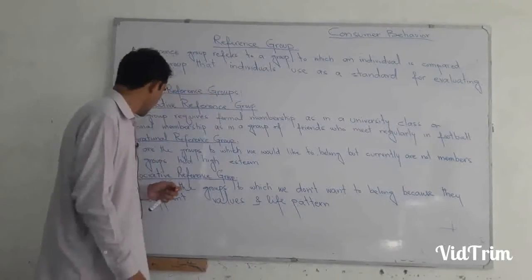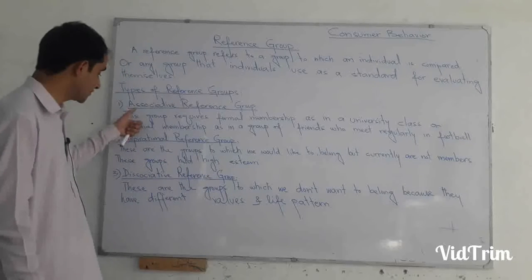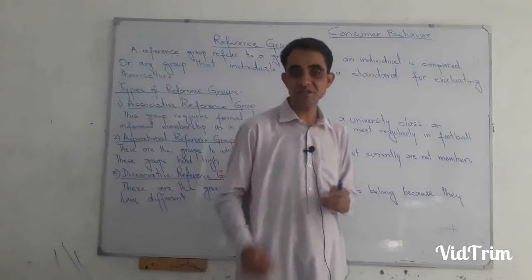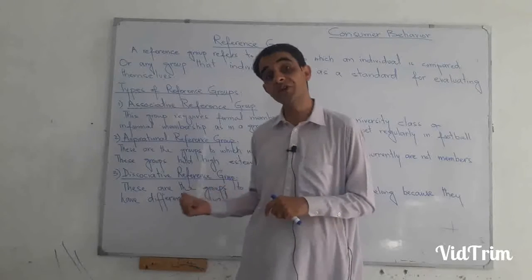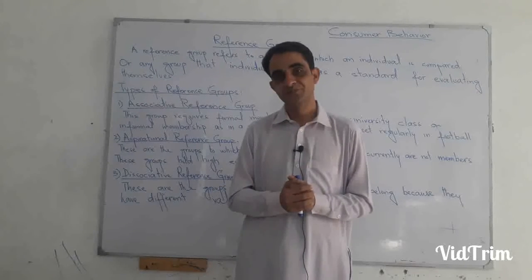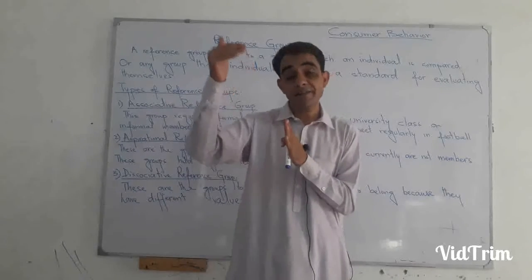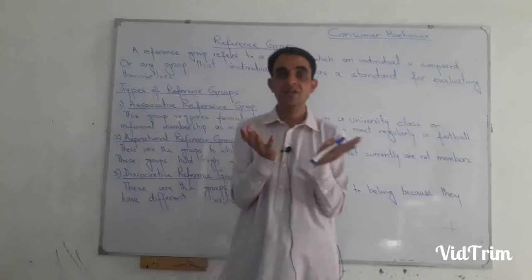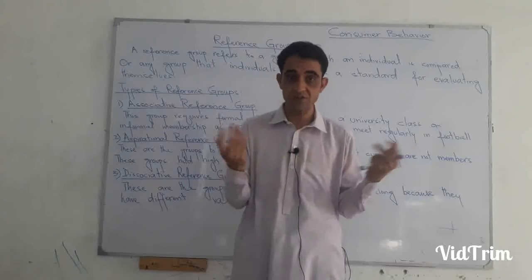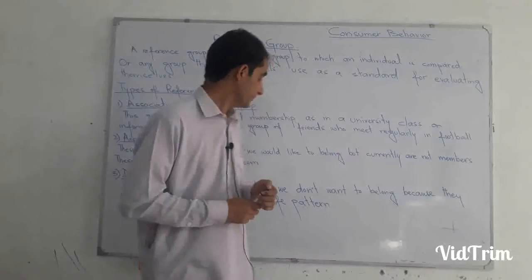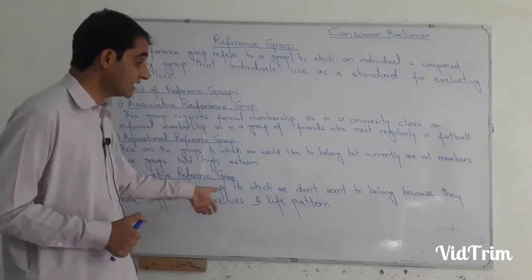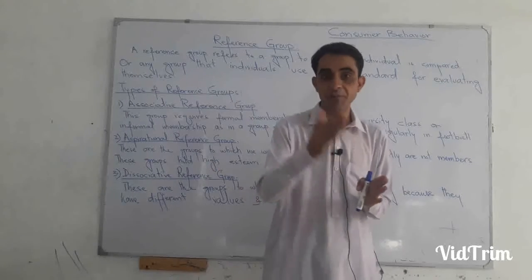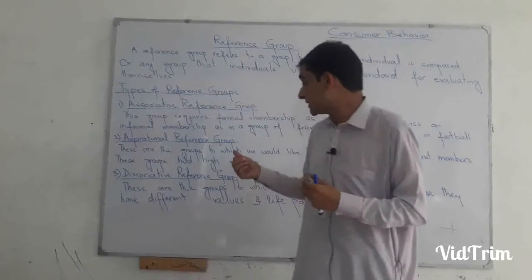Next, we have the dissociative reference group, which is the opposite of the associative reference group. These are not groups famous for good works or deeds — these are notorious groups. People don't want to join these groups because they hate them. In each culture, each society, and every country we have such types of groups — political groups, sports groups, cultural groups, etc. These are groups to which we don't want to belong because they have different values and life patterns; their lifestyle and values are different from ours.